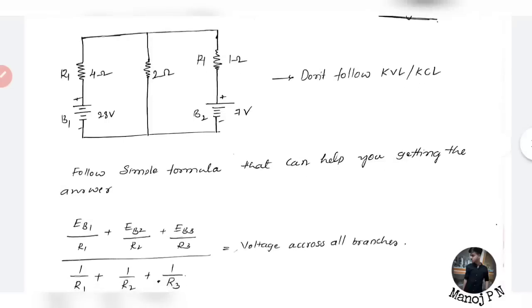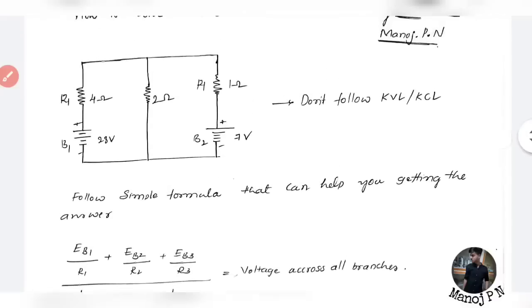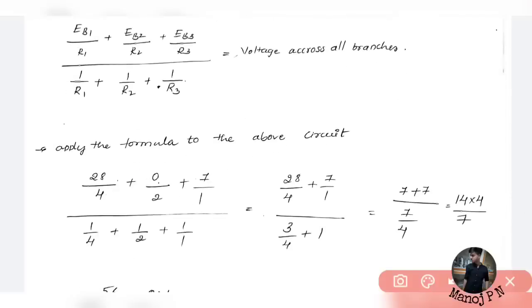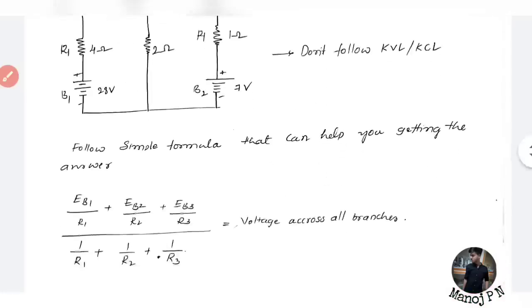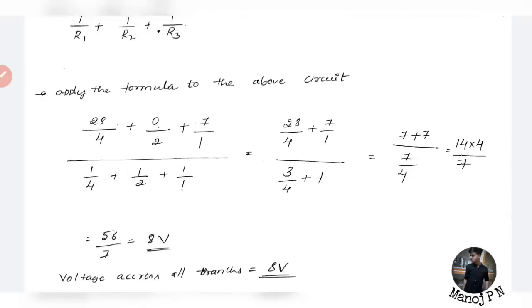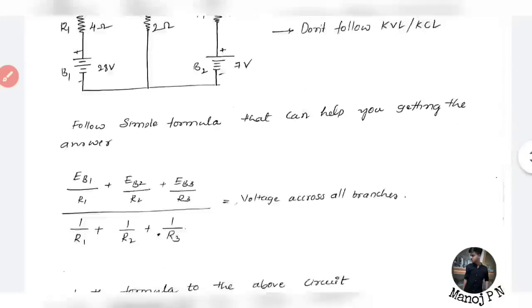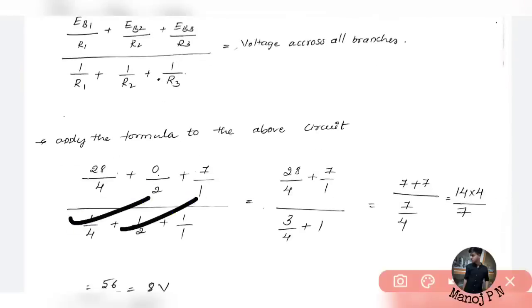Here, Eb1 is 28V and R1 is 4. Eb2: there is no battery, so Eb2 is 0 divided by R2 which is 2. Next, Eb3 is 7, divided by R3 which is 1. The denominator is 1/R1 plus 1/R2 plus 1/R3, which is 1/4 plus 1/2 plus 1/1. Note: earlier notations were a mistake — this is R1, R2, and R3.